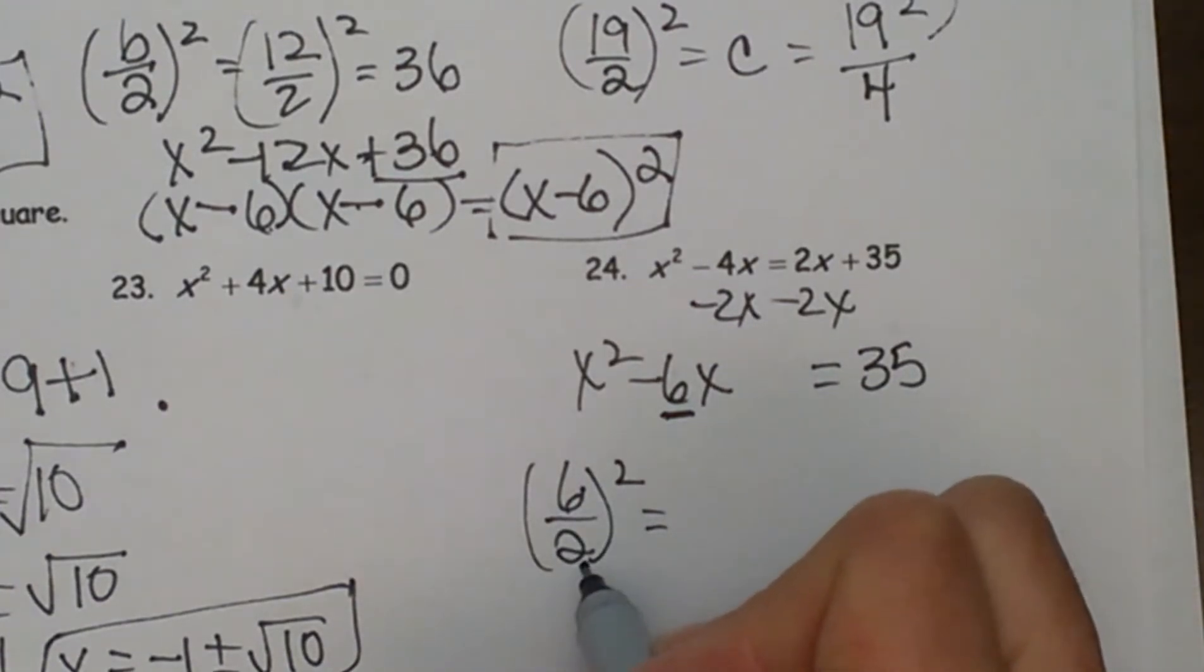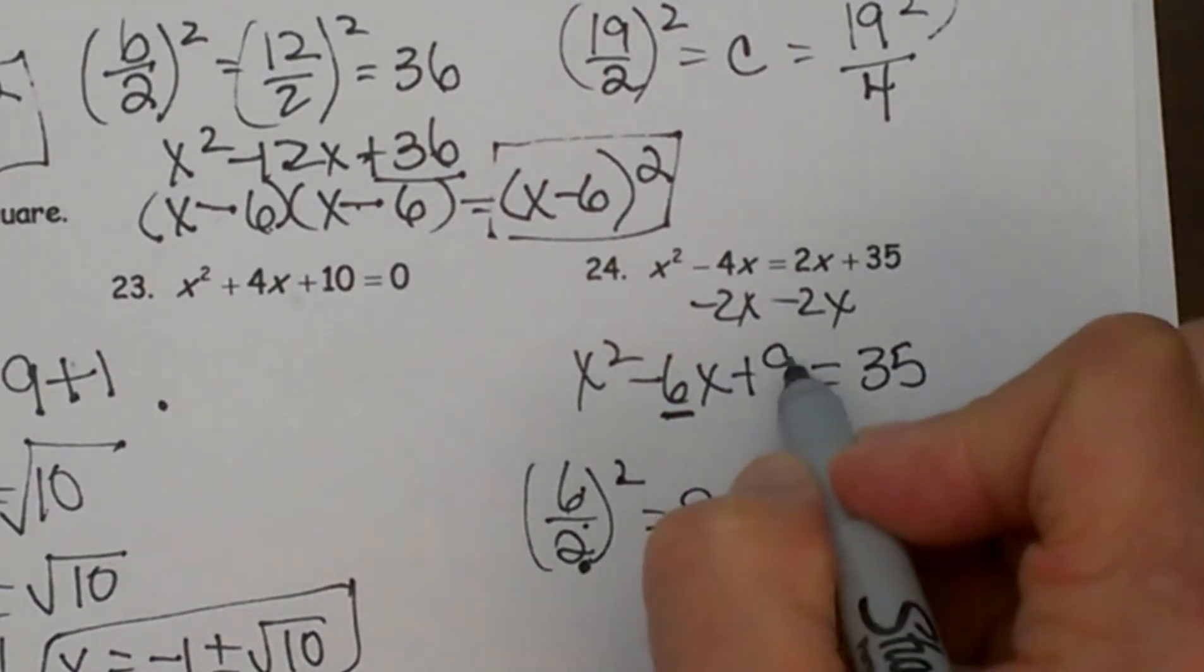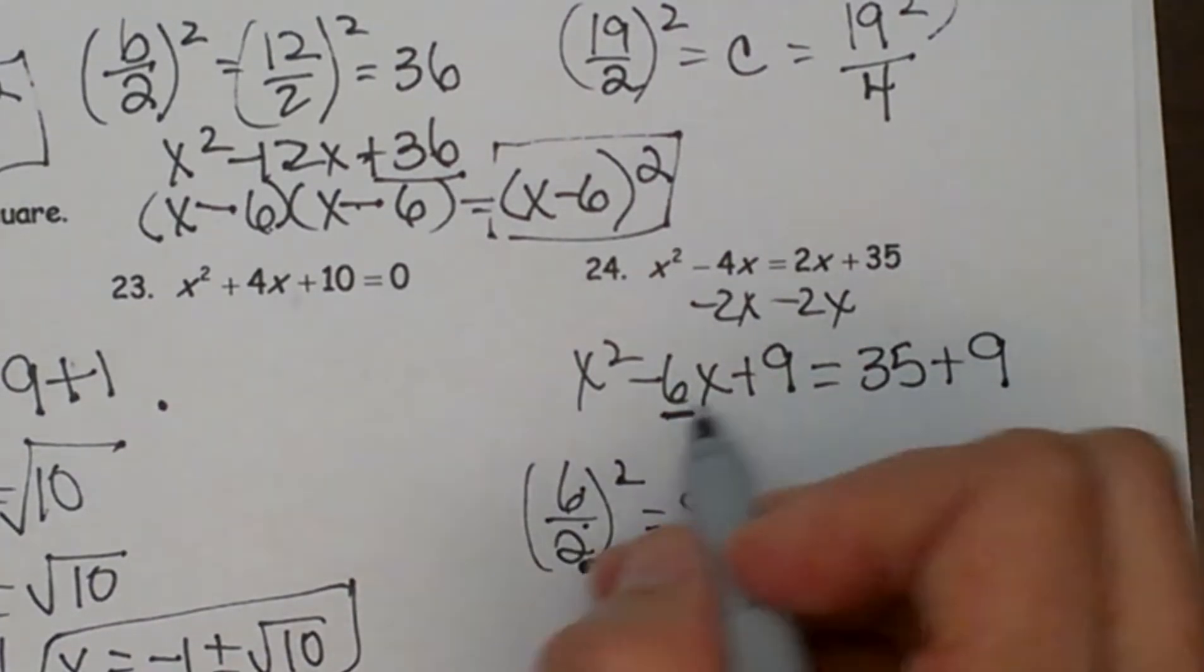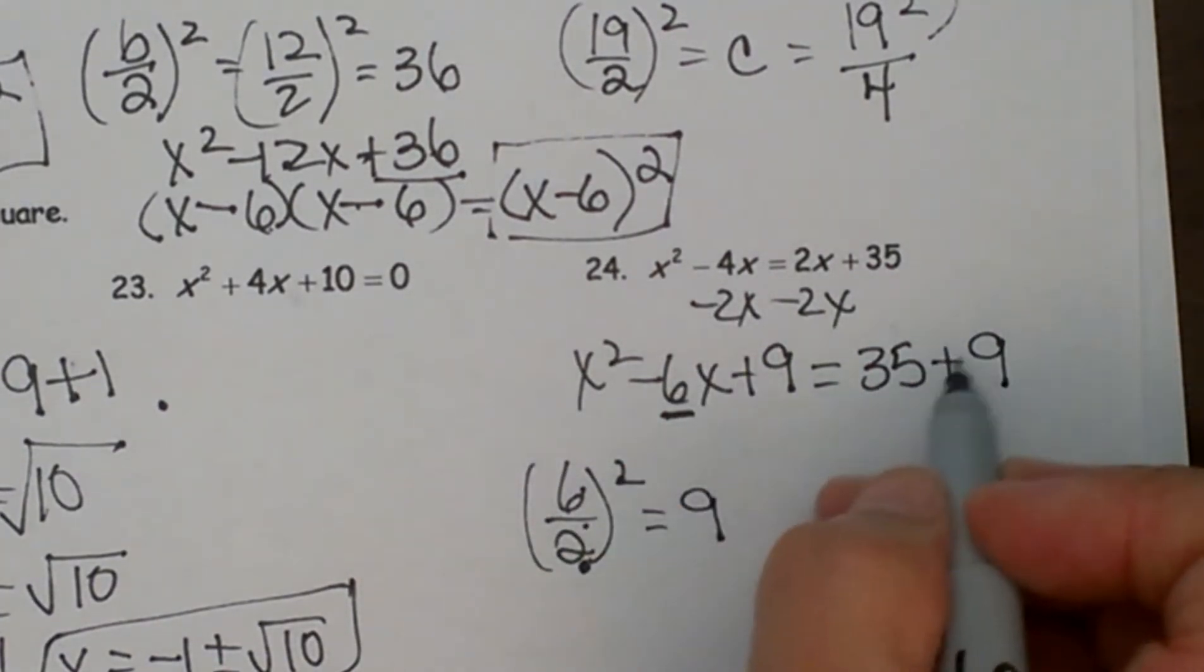So half of 6 is 3 and 3 squared is 9, so I am going to add 9 to the right side and I am going to add 9 to the left side because we have to keep an equation balanced. So if we add something to one side we have to add it to the other.